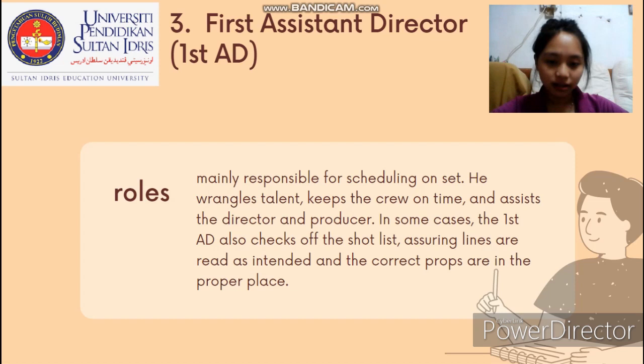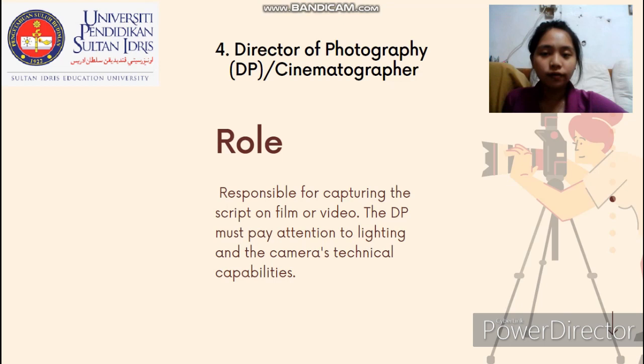The fourth production member is the director of photography, or DP, also called the cinematographer. The role of the DP is responsible for capturing the script on film or video. The DP must pay attention to lighting and the camera's technical capability.